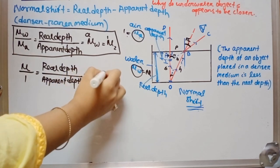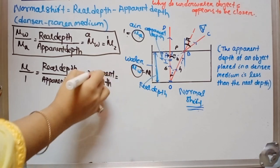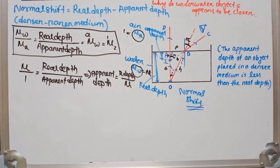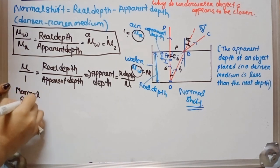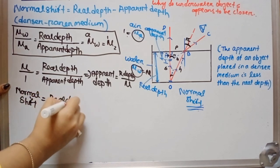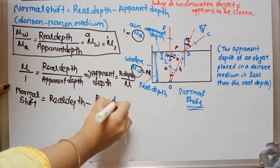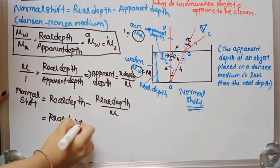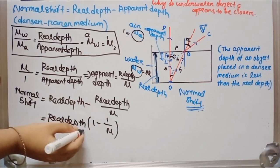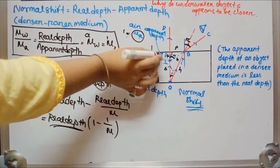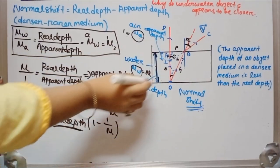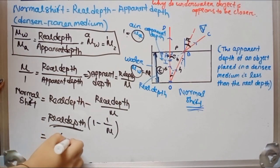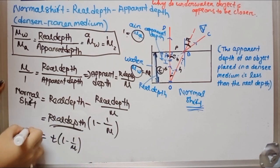Normal shift equals real depth minus apparent depth, which equals real depth minus (real depth divided by mu), giving normal shift equals real depth into (1 minus 1 by mu). The real depth OA is the thickness T of the medium, so normal shift equals T into (1 minus 1 by mu).